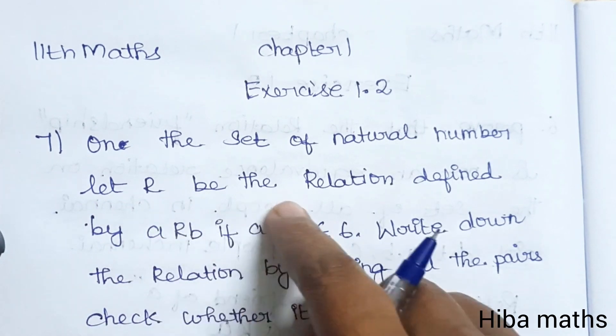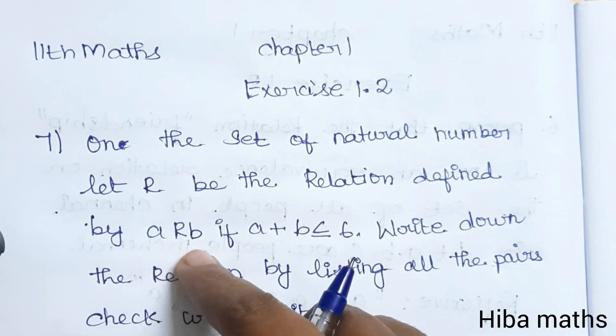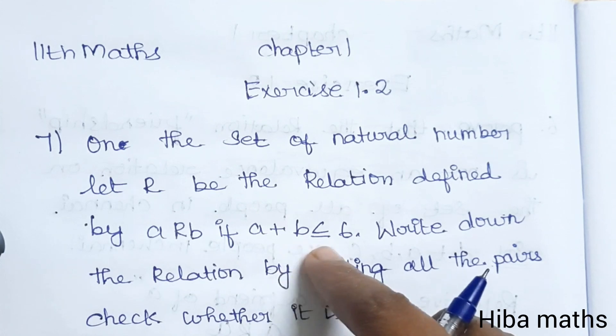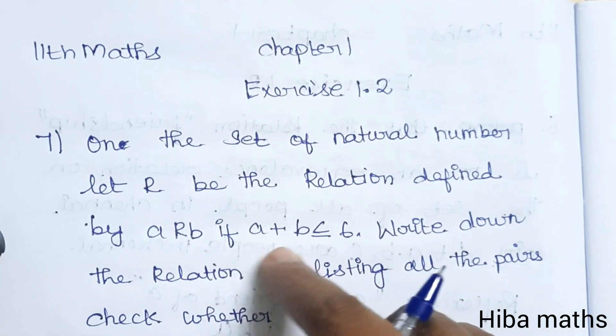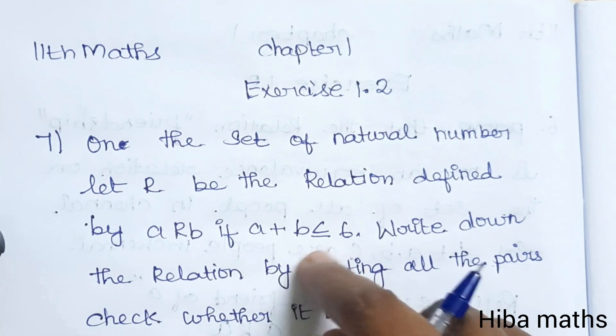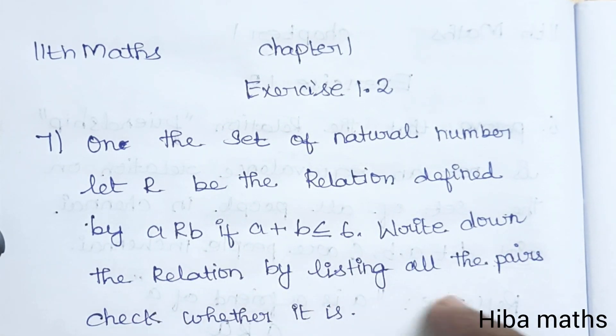Let R be the relation defined by: A relates to B if A plus B is less than or equal to 6. So if A and B are added together, the sum should be equal to or less than 6.